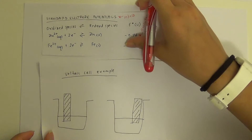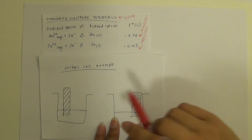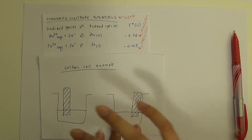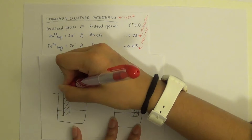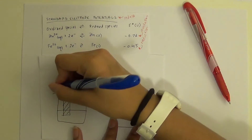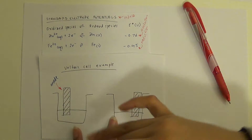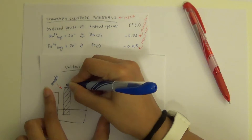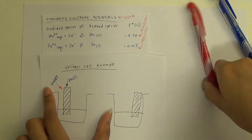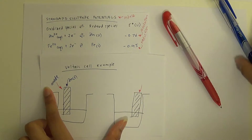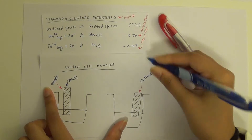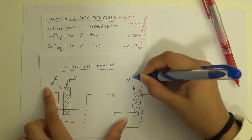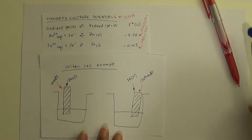Let's have a look at an example of an actual voltaic cell. Because zinc is the one oxidizing — losing electrons — we know that occurs at the anode. At the anode, the substance always oxidizes, so this electrode is zinc. The other one is therefore the cathode, where reduction always occurs, so this electrode is iron — Fe solid.